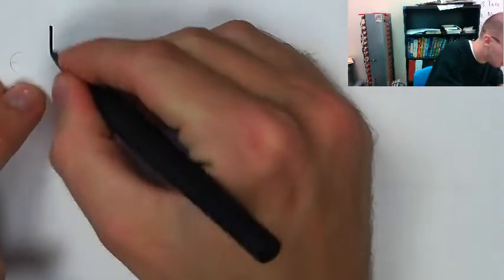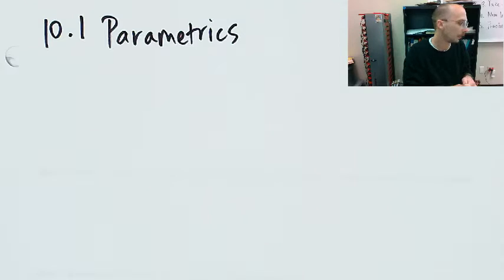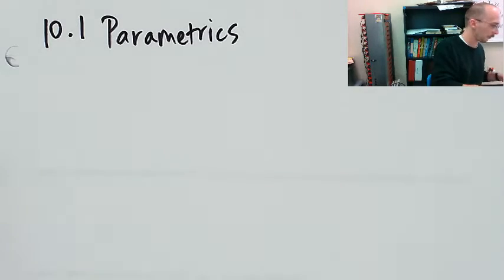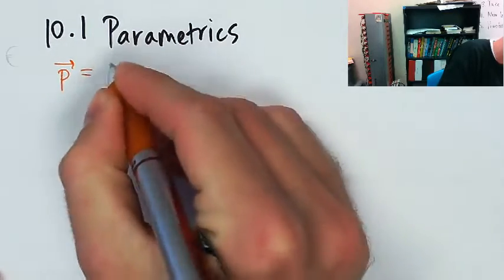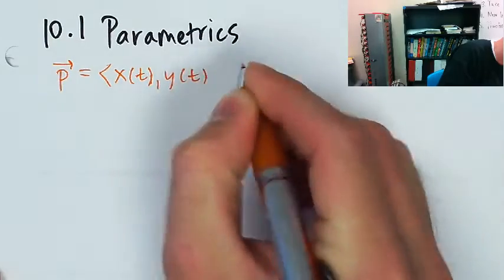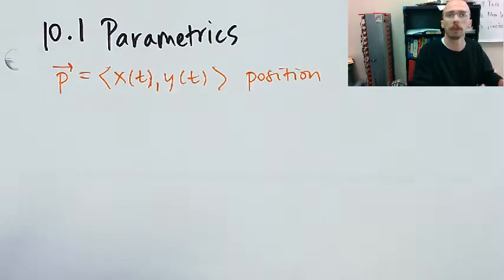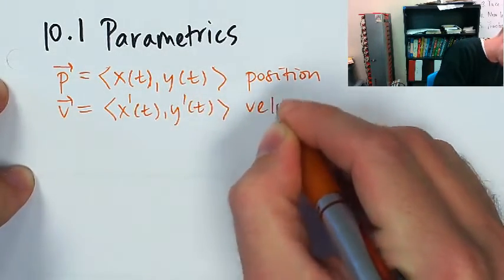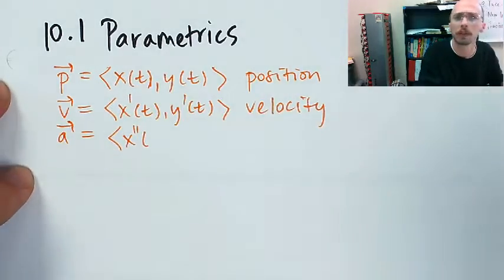Starting with 10.1, which is parametric equations. For parametric equations, as far as motion goes, if you've got the position vector being x(t) and y(t) giving position at time t, then we can find the velocity vector just by taking the derivative of each of the components separately. So then the velocity vector is the derivative of x and the derivative of y. And then the acceleration vector is still the derivative of position, except now it's a vector instead of just a number.